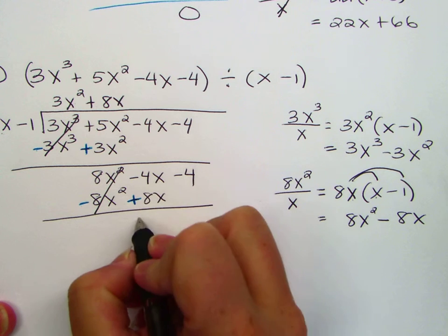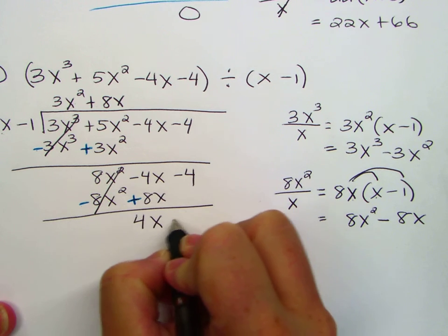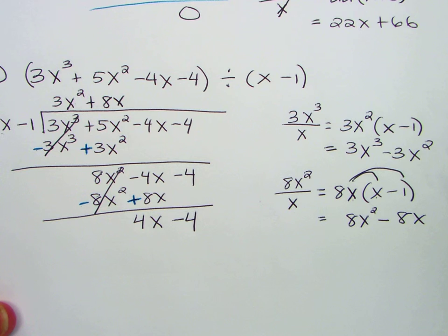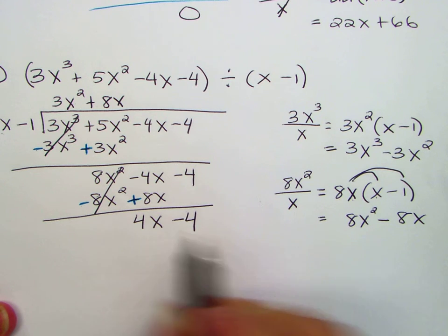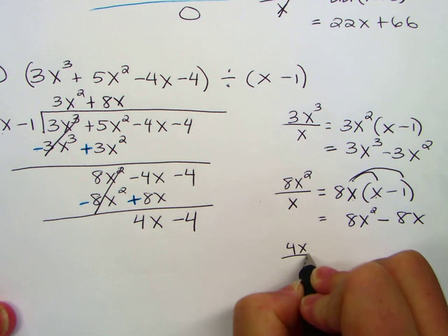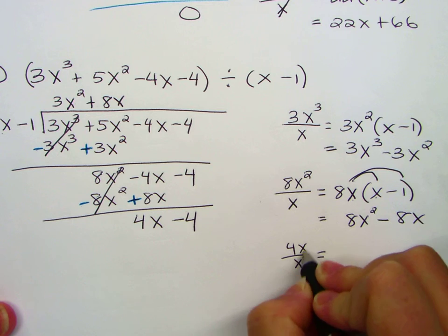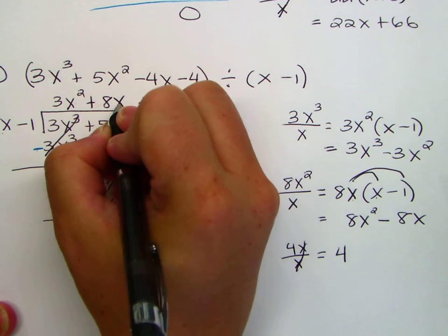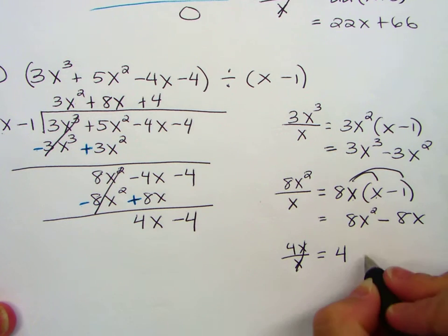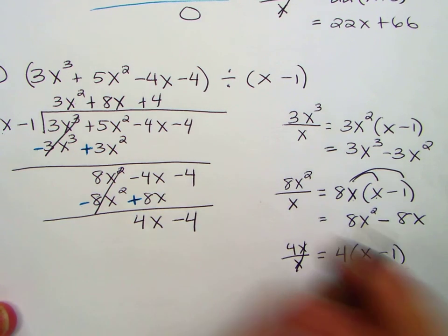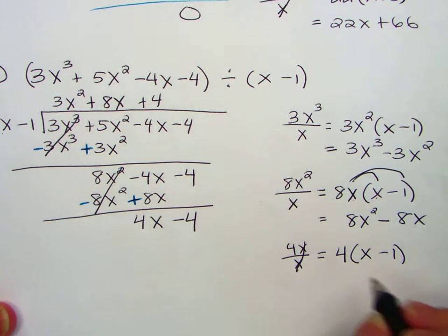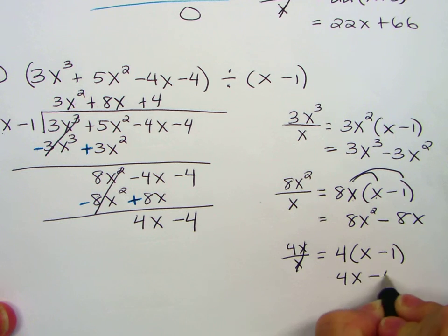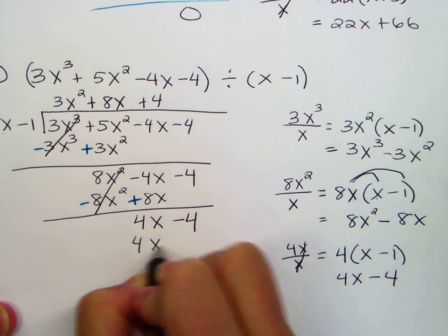Negative 4x and 8x is positive 4x minus 4. Last time, take the leading term, 4x, divide by x. The x's cancel and you get 4, plus 4. Distribute, multiply by the outside divisor, 4x minus 4, 4x minus 4.